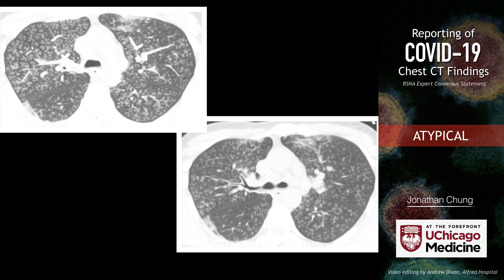Another example of tree-in-bud opacities — just to make sure you understand what tree-in-bud looks like. Tree-in-bud nodules are a subset of centrilobular nodularity, and by definition they should give you relative subpleural sparing. You can see how these nodules don't actually extend to the lung periphery. The nodules themselves give you nearly complete subpleural sparing, because tree-in-bud nodules are a subset of centrilobular nodularity, which by definition should spare the lung periphery.